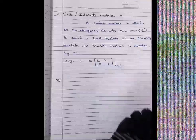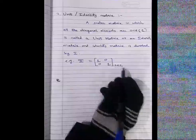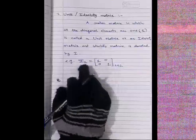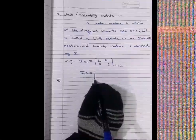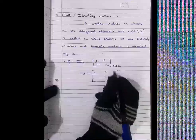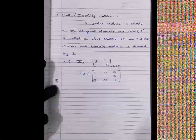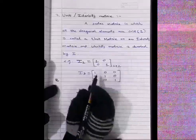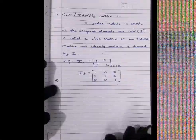Identity matrix I₂ has order 2×2. Similarly, I₃ is the identity matrix of order 3: a 3×3 matrix with all diagonal elements equal to 1 and all non-diagonal elements equal to 0. It is a scalar matrix because all diagonal elements are the same, and an identity matrix because they equal 1.